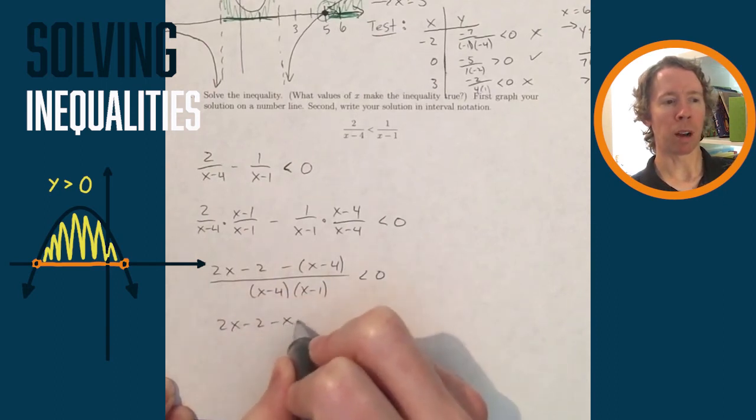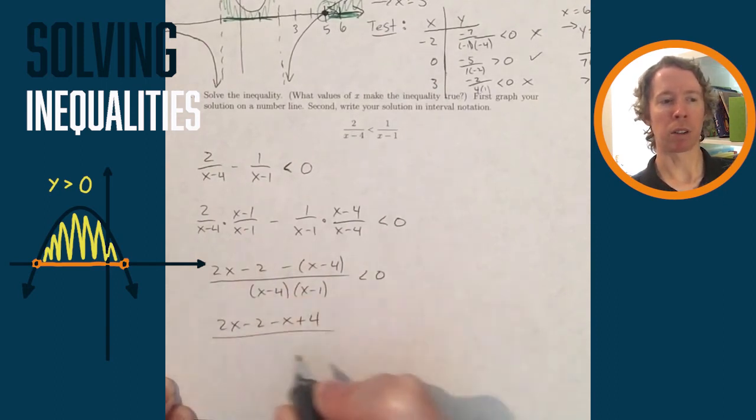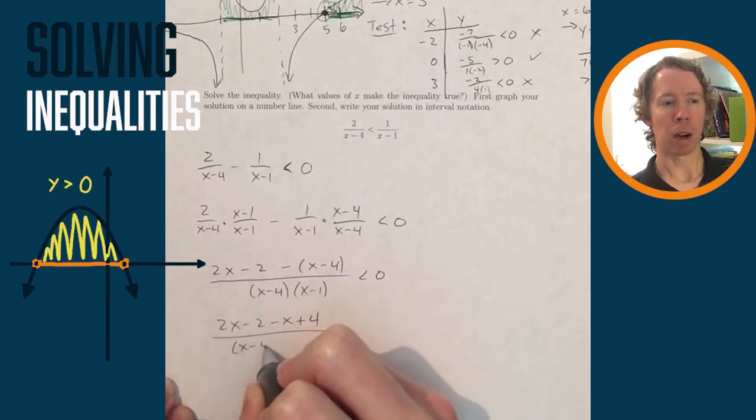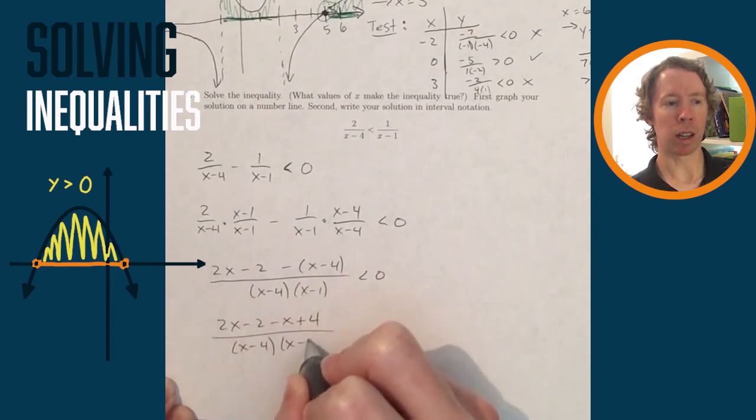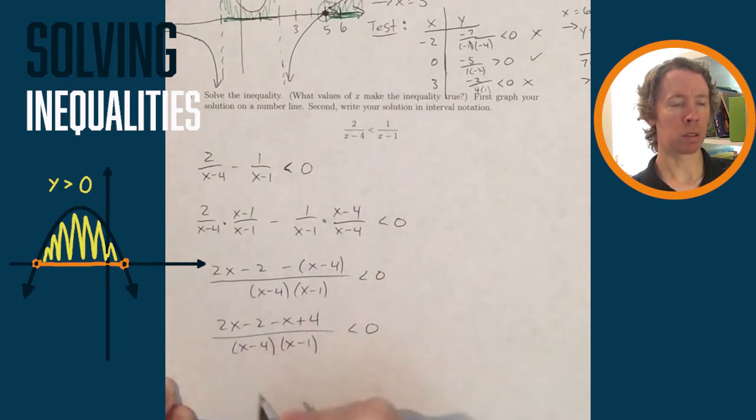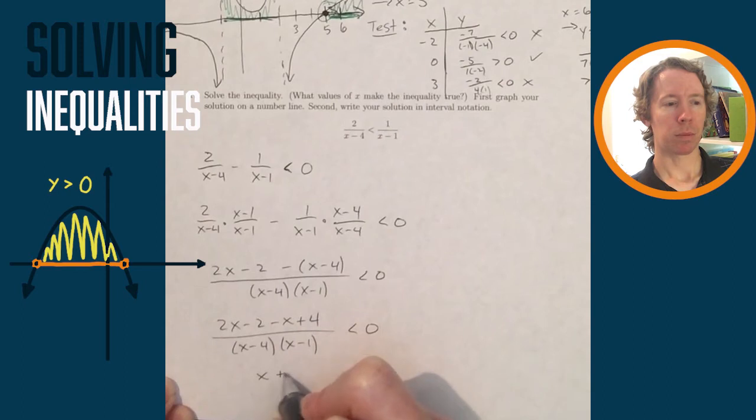So I found a common denominator, (x minus 4) times (x minus 1). And I combined those two fractions, distributed the negative, and now I need to combine like terms. And once I do that, then I'll sketch a graph of this left-hand side.